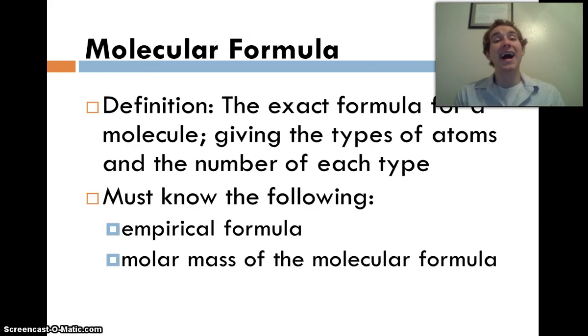So molecular formulas, by definition, are the exact formula for a molecule, giving the types of atoms and the actual number of each type. So here's what we've got. We've got our formula. It's the actual number. It's not reduced. It is the actual formula.